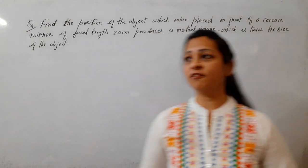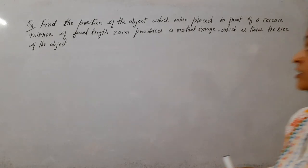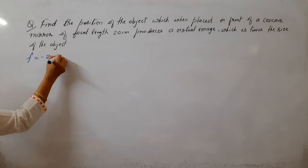Hello students, this is a question from chapter light, reflection and refraction. Find the position of object when placed in front of a concave mirror of focal length 20 cm. Concave diya hai, isliye focal length negative hogi.